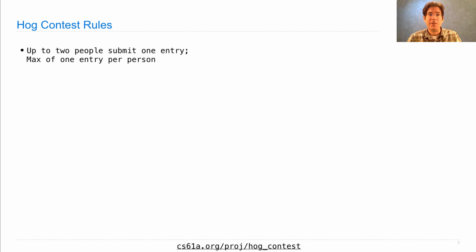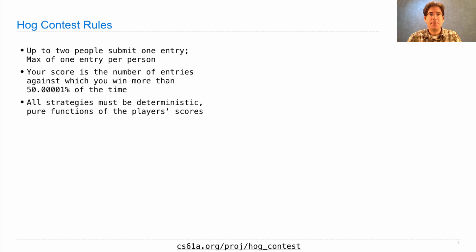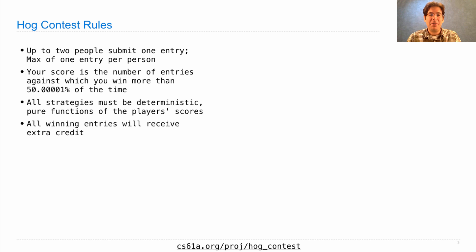The contest has some special rules. Up to two people may submit one entry, but there's a max of only one entry per person, so you can form teams of two. Your score in the contest is the number of other entries against which you win more than 50% of the time. All strategies must be a deterministic pure function of the current player's scores. All winning entries will receive extra credit — very little extra credit. Third place gets one point, second place gets two points, first place gets three points. Nobody else gets any points. This is not something you do for points; this is something you do for honor and glory.